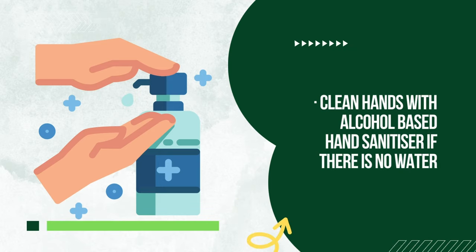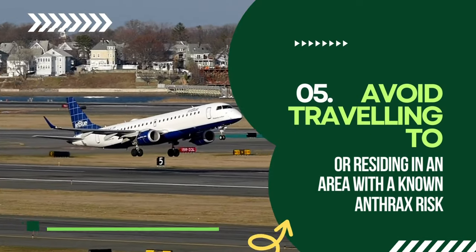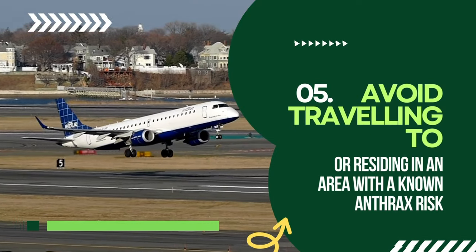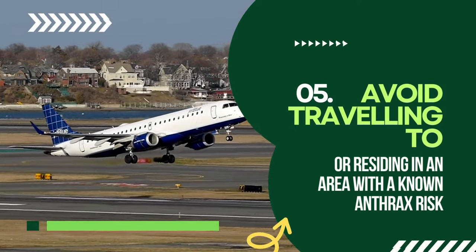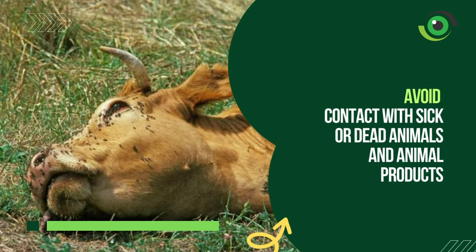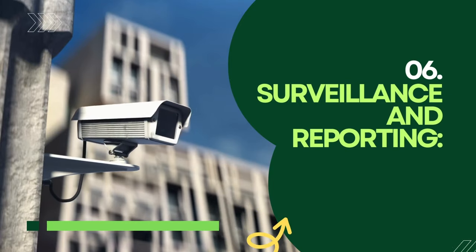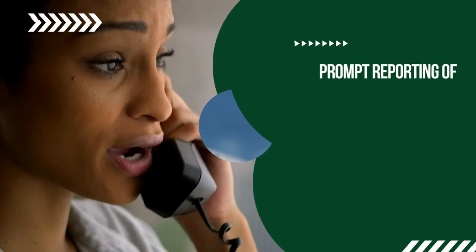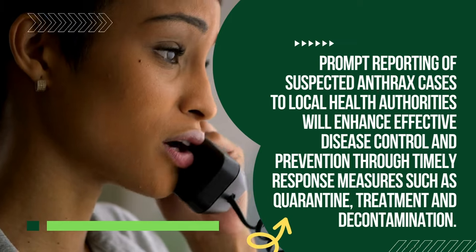Maintain good hygiene practices: always wash hands with soap under clean running water, or clean hands with alcohol-based hand sanitizer if there is no water. Avoid traveling to or residing in an area with unknown anthrax risk, and avoid contact with sick or dead animals and animal products.